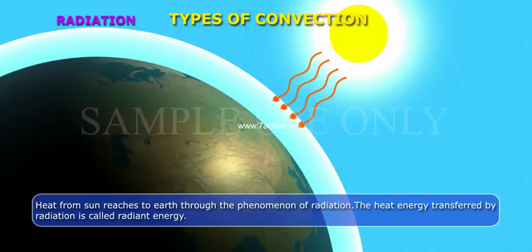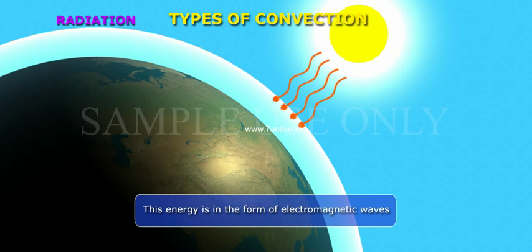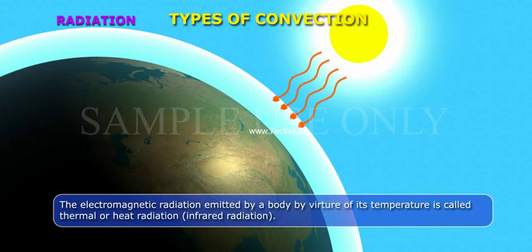The heat energy transferred by radiation is called radiant energy. This energy is in the form of electromagnetic waves. The electromagnetic radiation emitted by a body by virtue of its temperature is called thermal or heat radiation (infrared radiation).